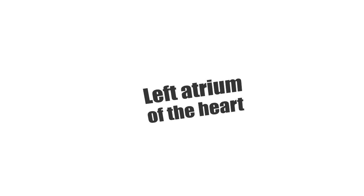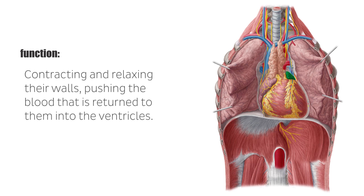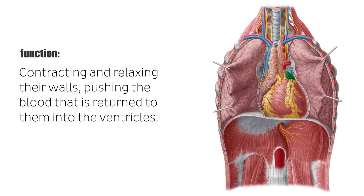Hey everyone, this is Matt from KenHub, and in this tutorial, we will talk about the left atrium of the heart. The atria of the heart, which are known singularly as an atrium, are a pair of blood-collecting chambers that comprise two of the four chambers of the heart. The main function of the atria is to facilitate circulation by rhythmically contracting and relaxing their walls, pushing the blood that is returned to them via the major venous vessels during ventricular systole into the ventricles.